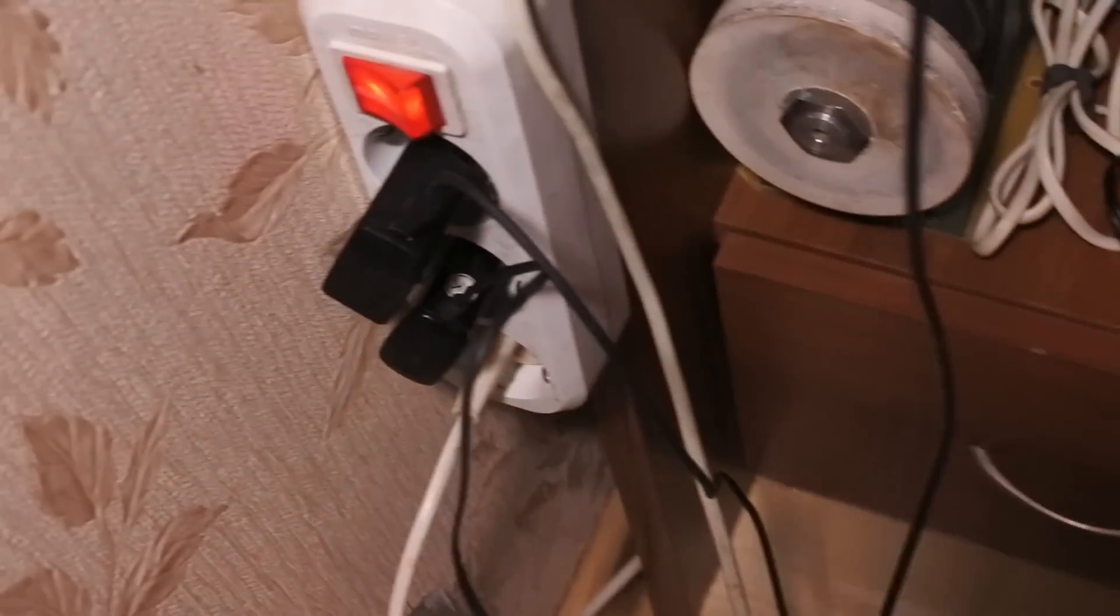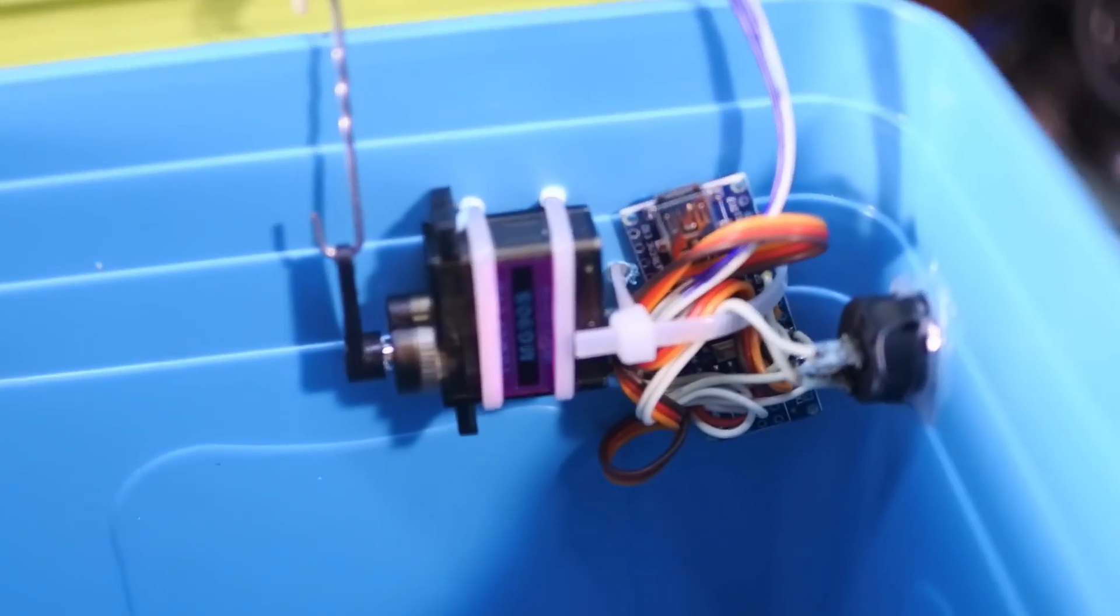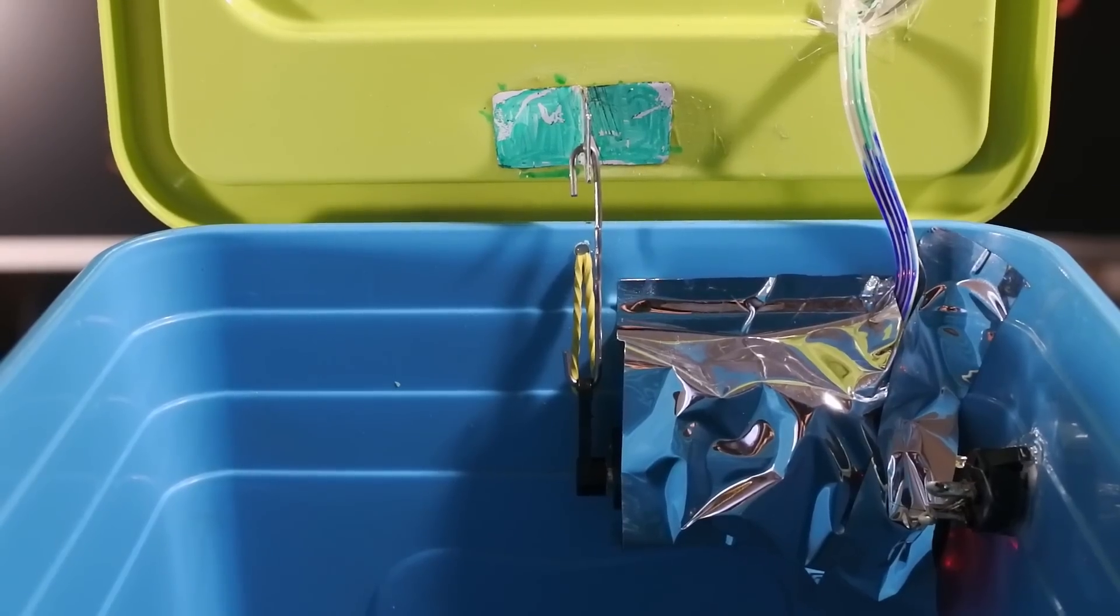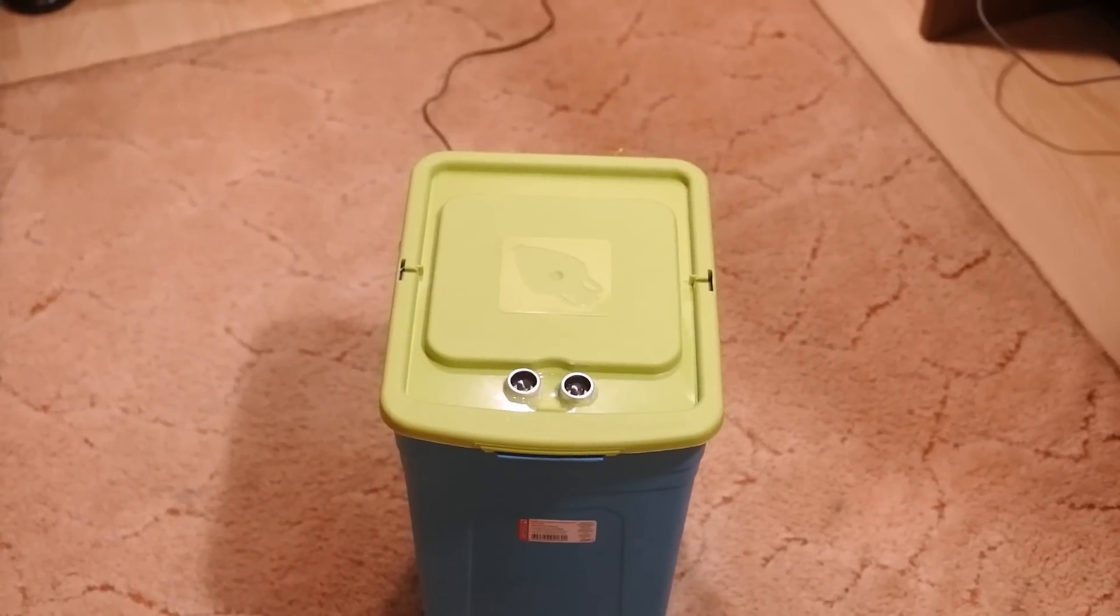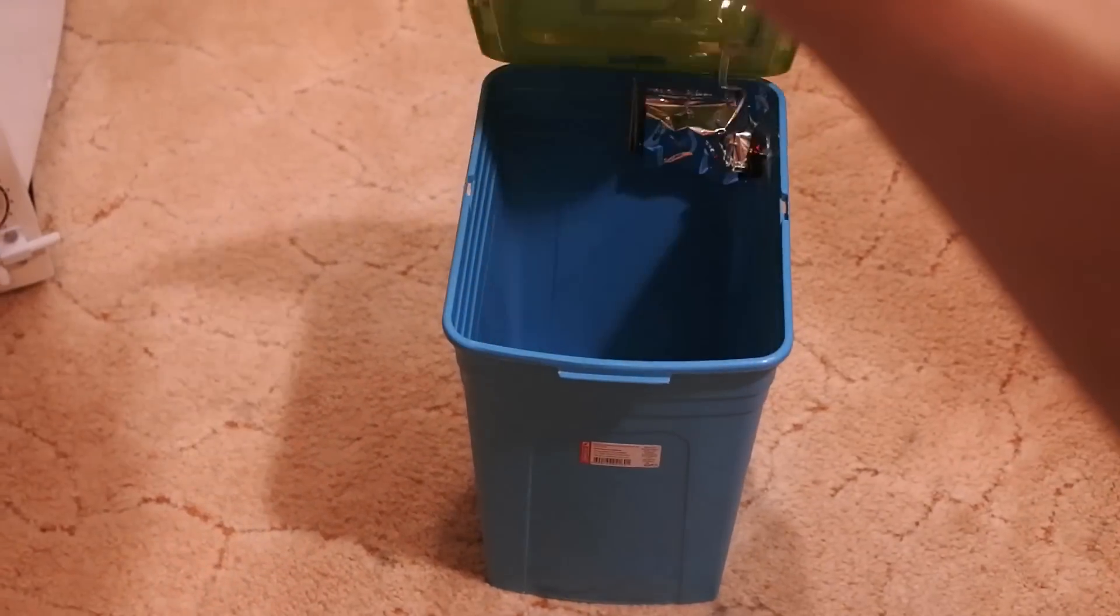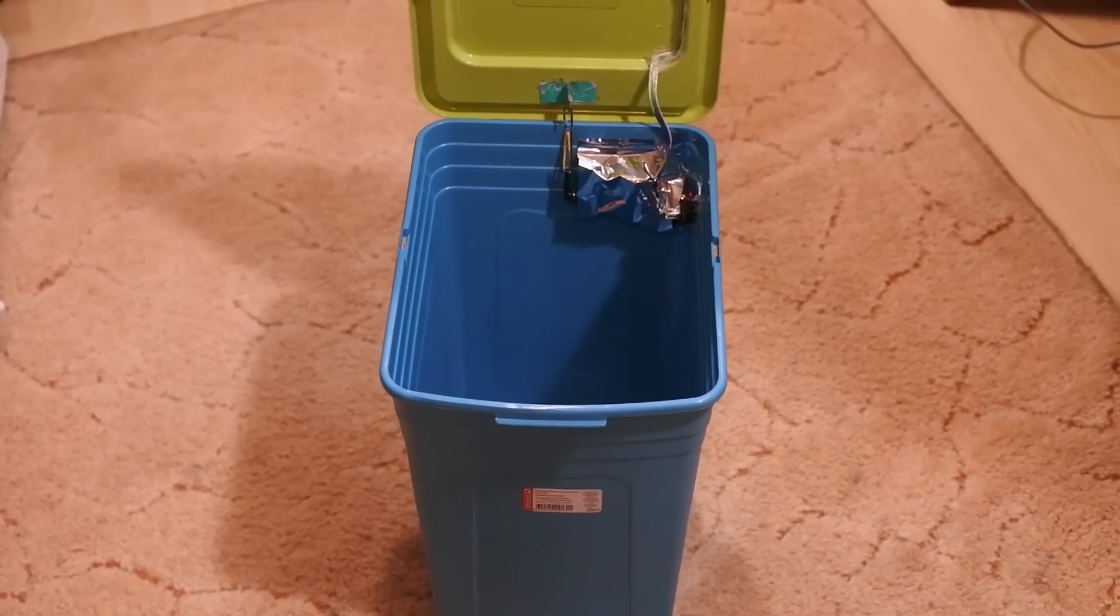All electronics I fix with cable ties and cover with non-transparent tape. Also you can build the whole mechanism outside the trash can, but I wanted to make a robot trash can that is ordinary outside. Just the sensor is showing up.